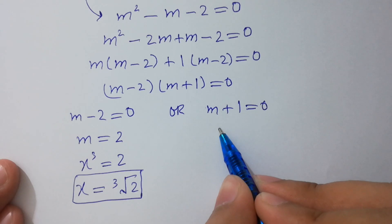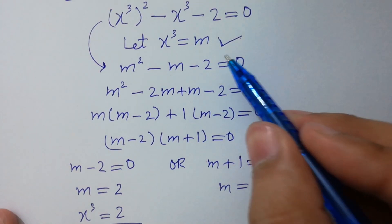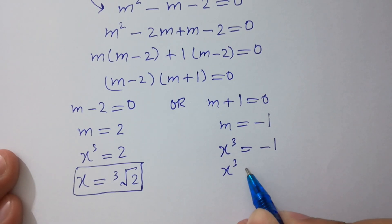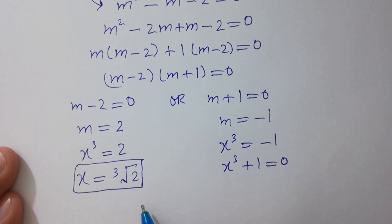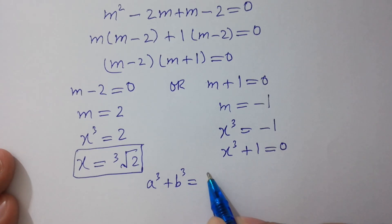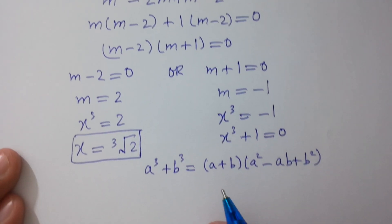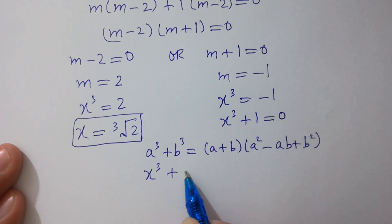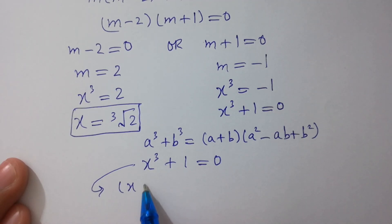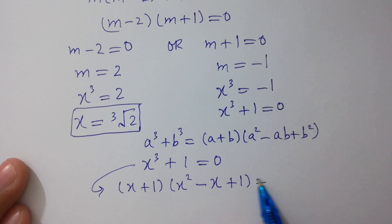Now solving m plus 1 equal to 0 gives m equal to minus 1, so x cube equal to minus 1, which means x cube plus 1 equal to 0. Using the sum of cubes identity, a cubed plus b cubed equals (a plus b)(a squared minus ab plus b squared), we factor x cube plus 1 as (x plus 1)(x squared minus x plus 1) equal to 0.